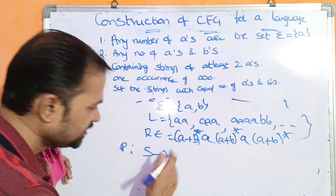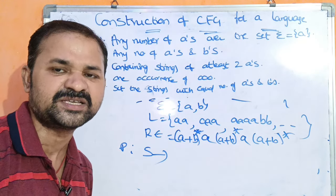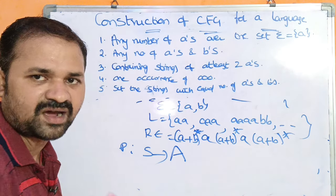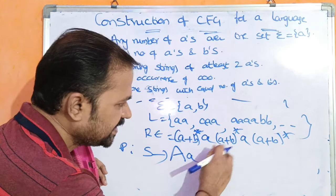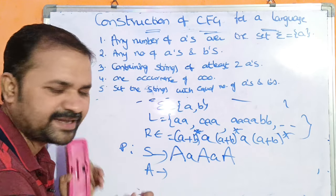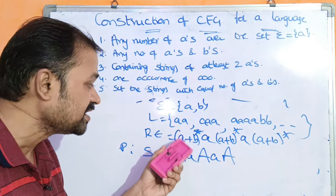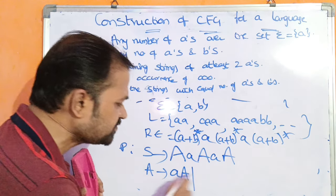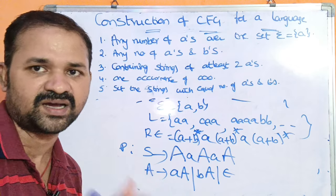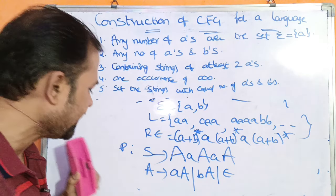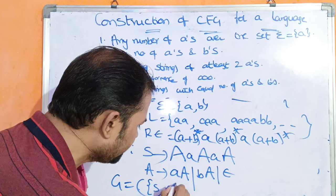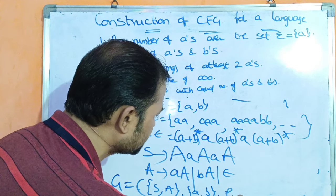Let us write the production rule. S implies the non-terminal A, then small a, then A, then small a, then A — where capital A represents any number of A's and B's. Capital A implies A A (any number of A's), or B A (any number of B's), or epsilon (to stop). The context-free grammar is G = (V, Σ, P, S) where V contains two non-terminals S and A, terminals are A and B, production rule P, starting symbol S.